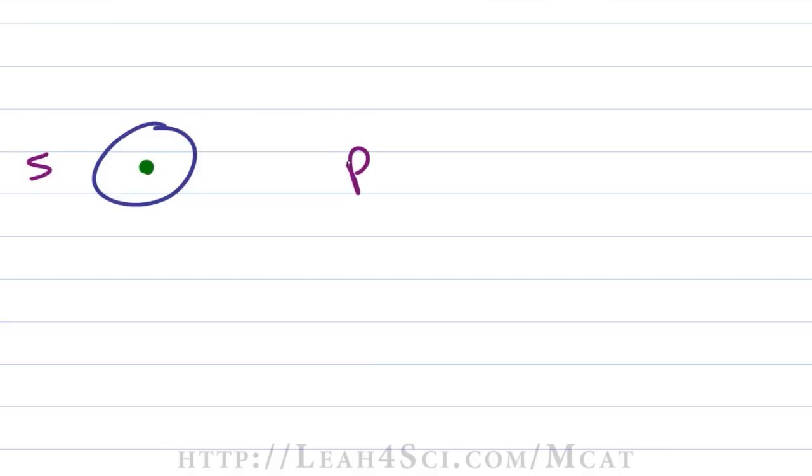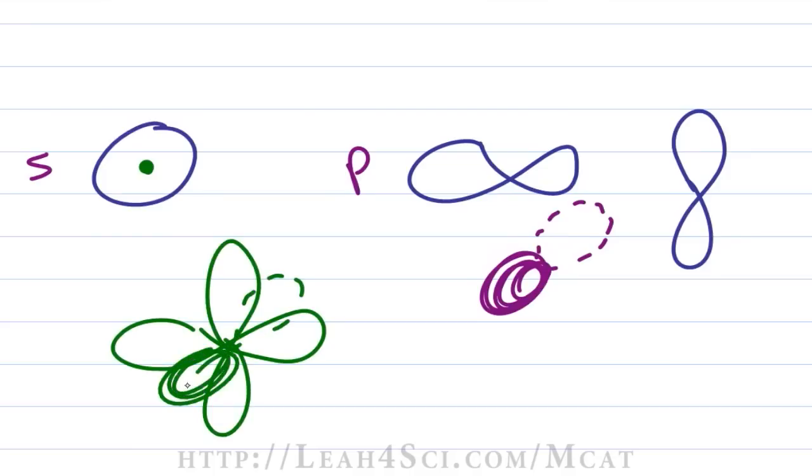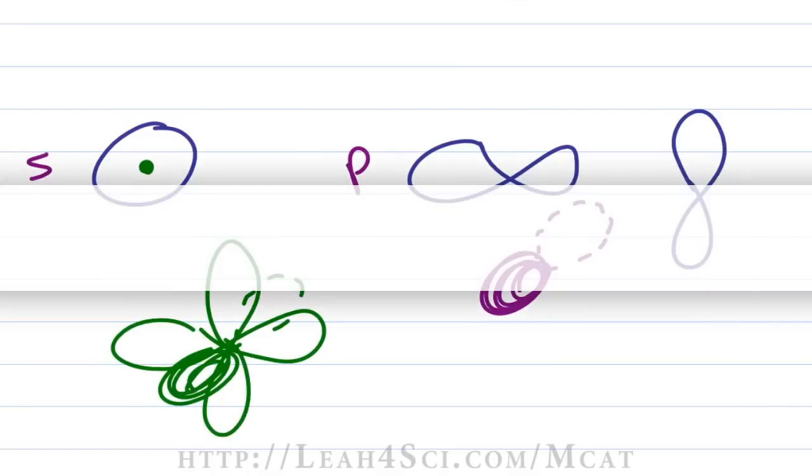For the P orbital, we have the figure 8 or infinity symbol and we have 3 of them. Px in the x direction, Py in the y direction and Pz is coming half forward and half back so we'll show the forward with a dark bold orbital and we'll show the back with a dotted orbital like it's fading into space. If you want to put it all together you have Px, Py and there's your Pz.